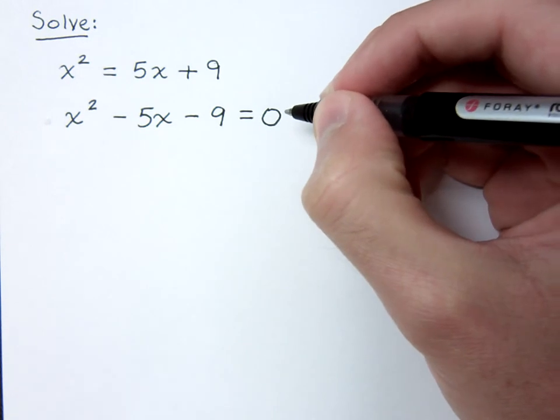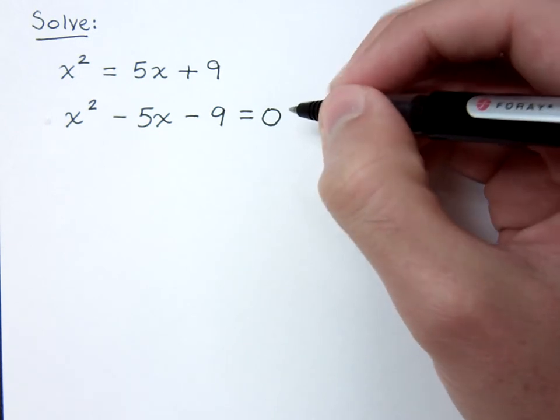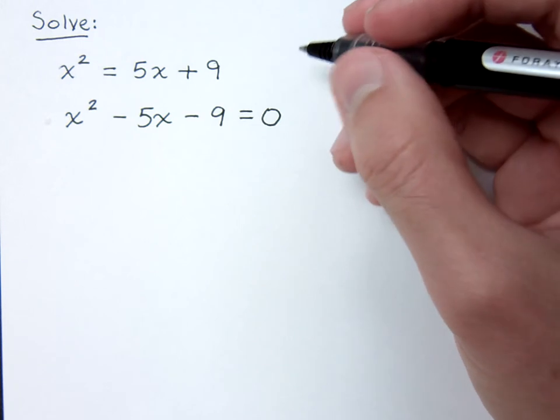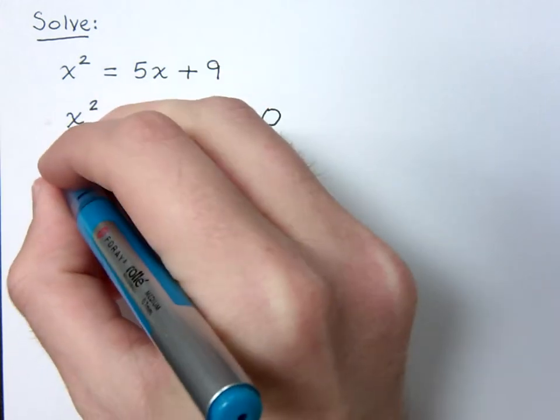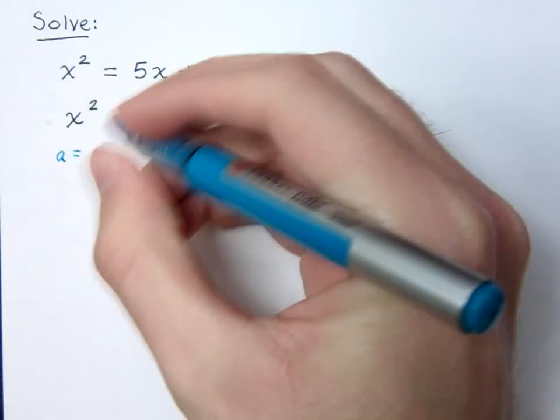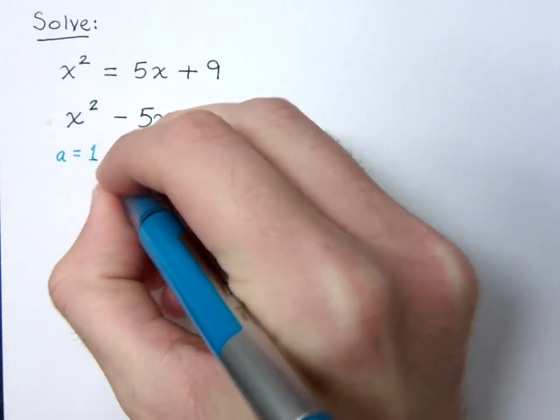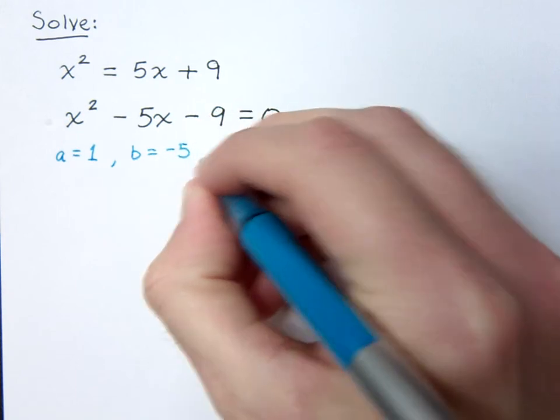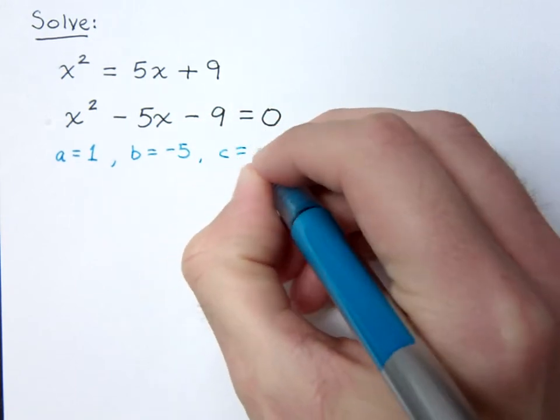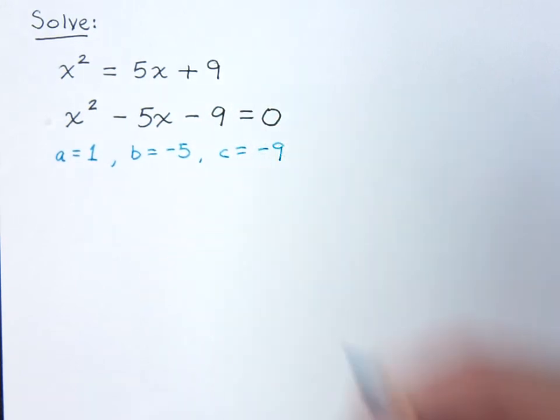We have to have everything on one side of the equation so that we can clearly identify the a, b, and c in our quadratic equation. So, that's really not too bad for us. Your a is just the coefficient of x squared, which is 1. b is the coefficient of x, in this case that's negative 5. And c is going to be your constant term, negative 9.